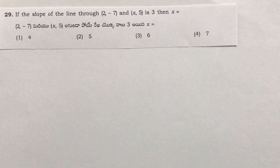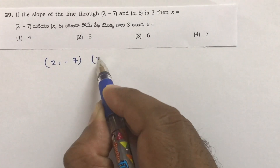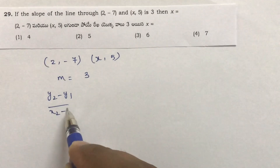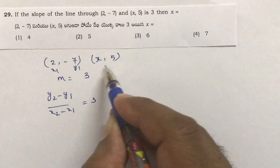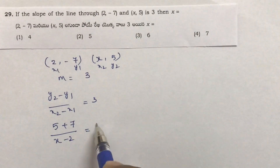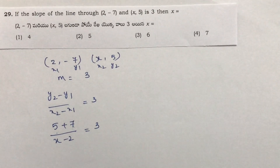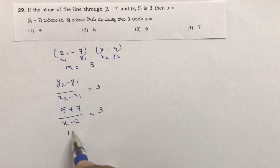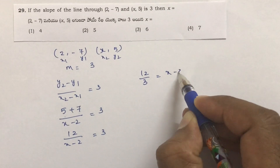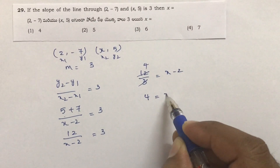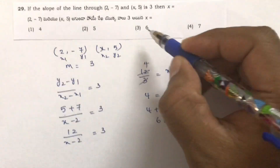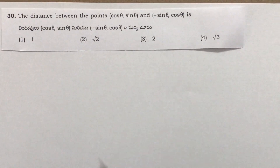If the slope of the line through (2,−7) and (x,5) is 3, find x. Using the slope formula: (y2−y1)/(x2−x1) = (5−(−7))/(x−2) = 12/(x−2) = 3. Cross-multiplying: 12 = 3(x−2), so x−2 = 4, giving x = 6. The correct option is 3.